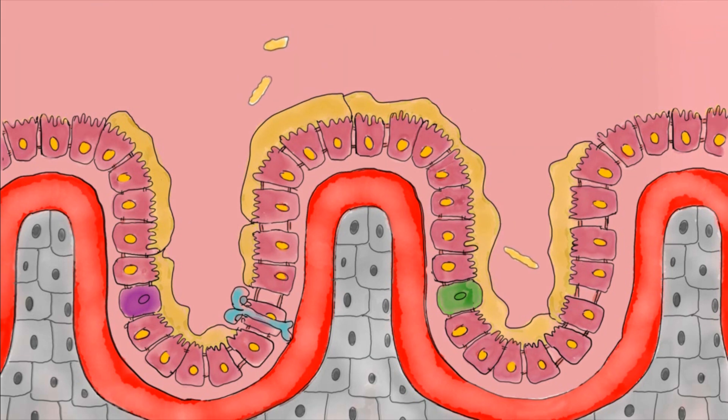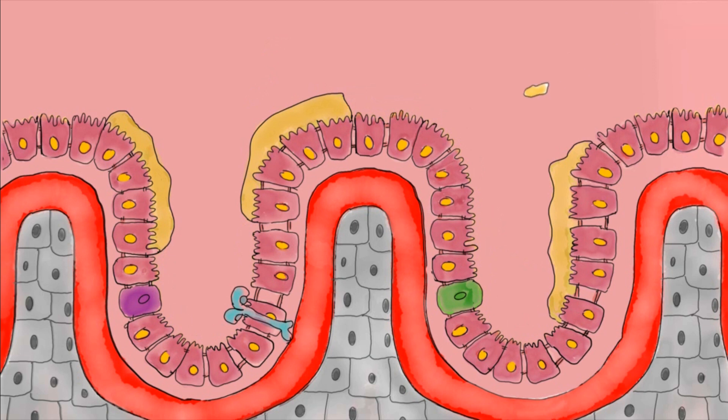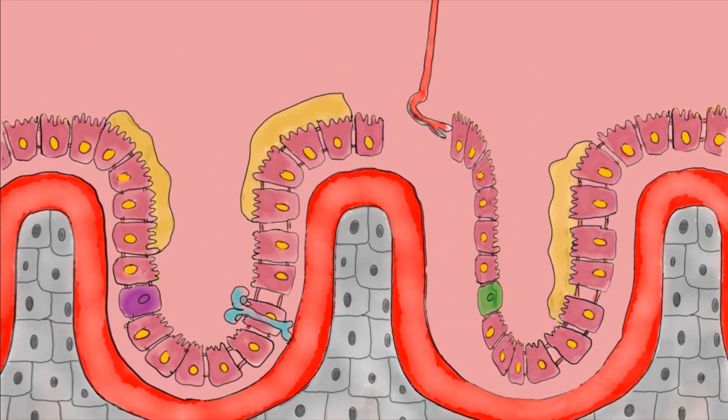For example, when the number of Prevotella bacteria decreases, so do the building blocks of the mucin layer, rendering it more susceptible to becoming leaky and cause health problems.